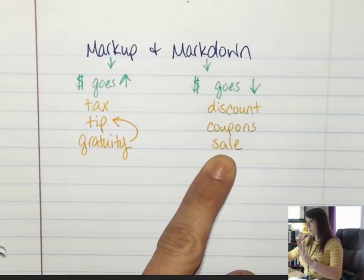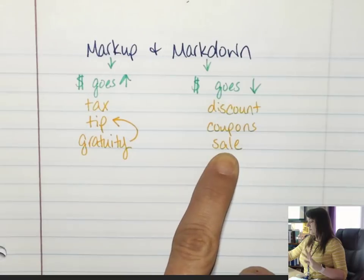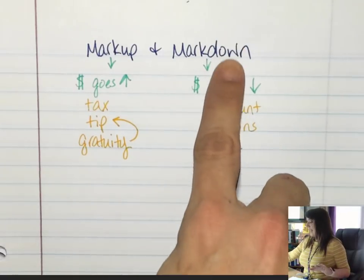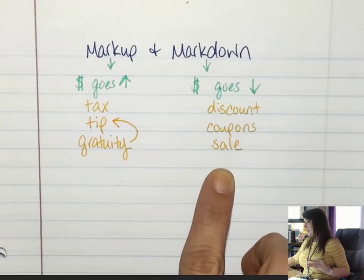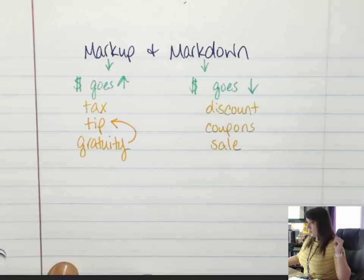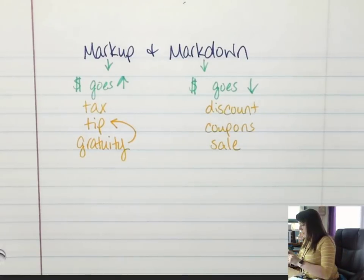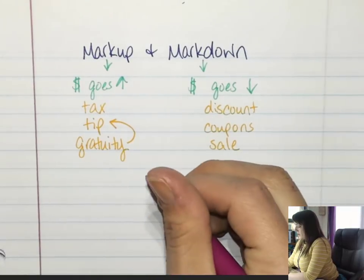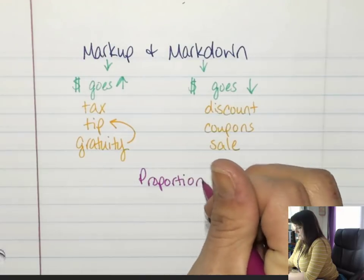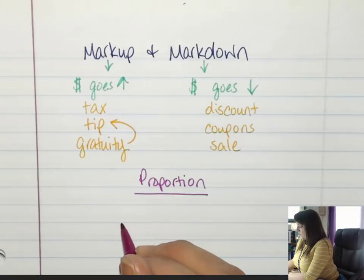So just logic: if it's a markdown I should end up with something less, if it's a markup I should end up with something more. Got it so far? Okay, we are going to use one way to do this - we're going to use a proportion.